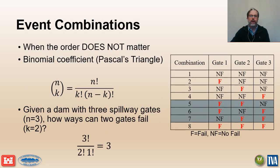Combinations help us to count and list the various outcomes that can occur when the order of the events does not matter. In this example, we can use the binomial coefficient to calculate the number of ways that two gate failures can occur for a dam that has three spillway gates. There are a total of eight possible combinations listed in the table on the right-hand side, with three of those combinations corresponding to the outcome of two spillway gate failures. We'll pause for a moment to give you a chance to look at the eight combinations.